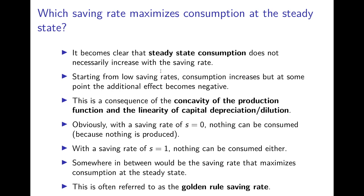At some point the increase of production becomes flatter than the capital depreciation and dilution line, and from that point onwards consumption decreases for further increases in the saving rate. It's also obvious that for a saving rate of s equal to zero nothing can be consumed because in the Solow model nothing can be produced without any savings - there is no capital. With a saving rate of one, nothing can be consumed either because everything saved just compensates for capital depreciation and capital dilution. So somewhere in between must be a saving rate that maximizes consumption at the steady state.